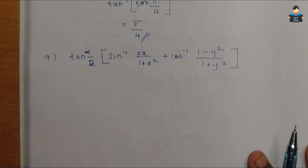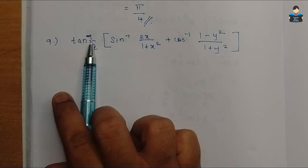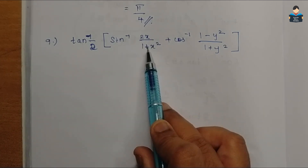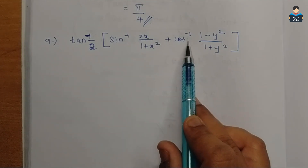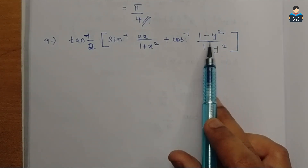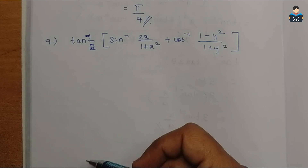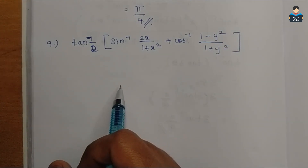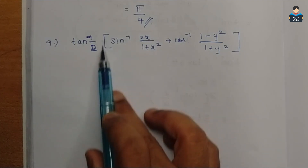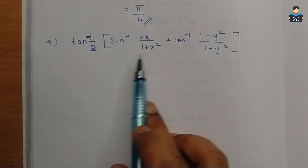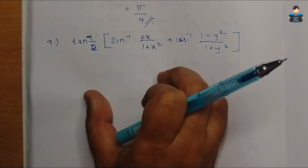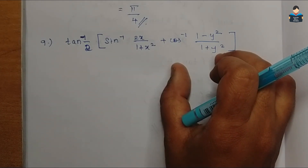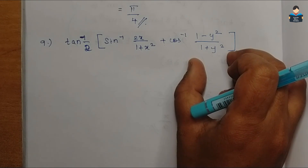Next, Question 9: find tan(1 by 2) times [sin inverse of 2x by (1 plus x square) plus cos inverse of (1 minus y square) by (1 plus y square)]. We solve this in two parts. First, solve sin inverse of 2x by (1 plus x square). Second, solve cos inverse of (1 minus y square) by (1 plus y square).